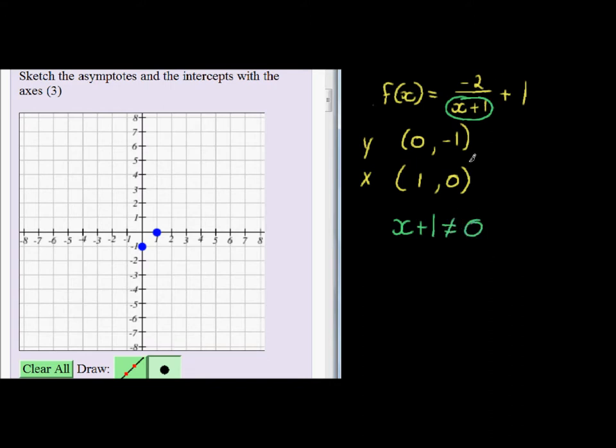If it is equal to 0, we are dividing by undefined, so that means x may not be equal to negative 1.